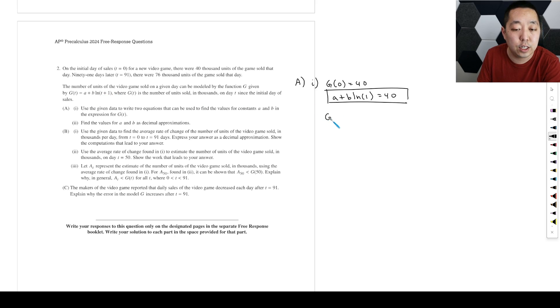And then also G of 91 is equal to 76. So I plug in 91 here. It's going to be A plus B natural log of 91 is equal to 76. So that would be another equation. That would be two equations there.